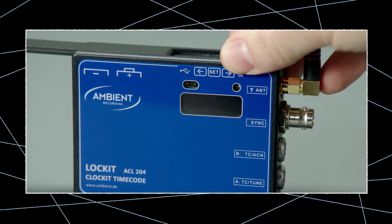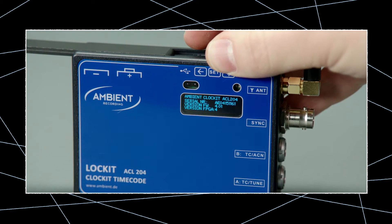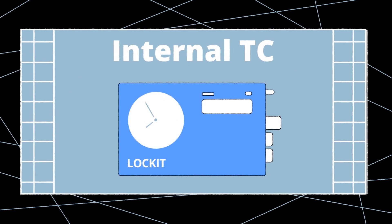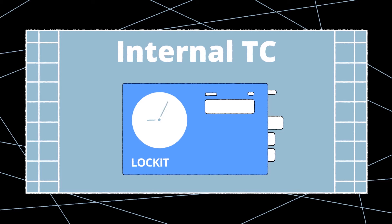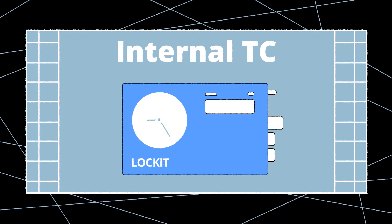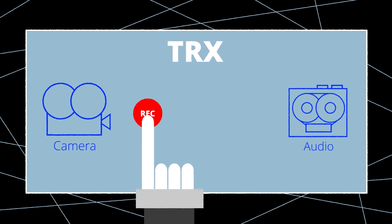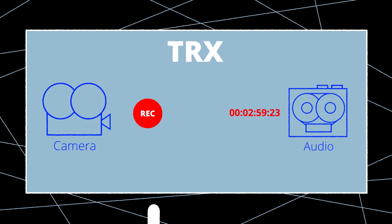When you start an ambient locket from factory default, it will always boot on jammed, in internal timecode mode, with sync switched off. So the first thing we should decide is the running mode of the locket. Internal timecode is used if you just want to jam-sync the lockets without ACN. Continuous Jam or C-Jam is used if you want to use the ACN for zero-drift wireless synchronization, and TRX is used for wireless record-run timecode setups.